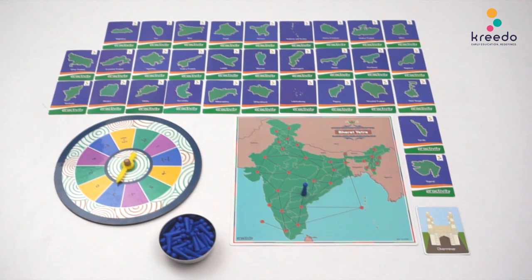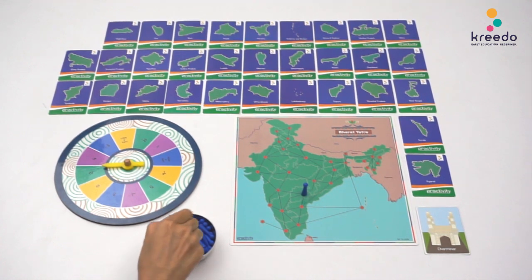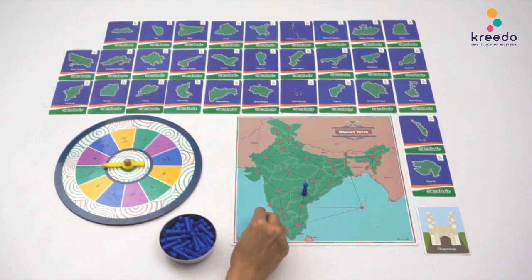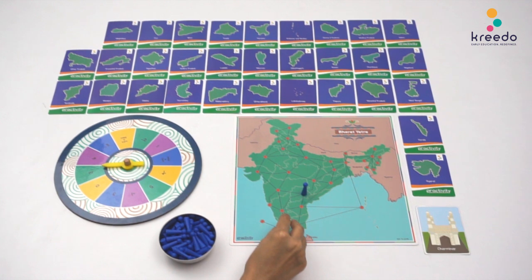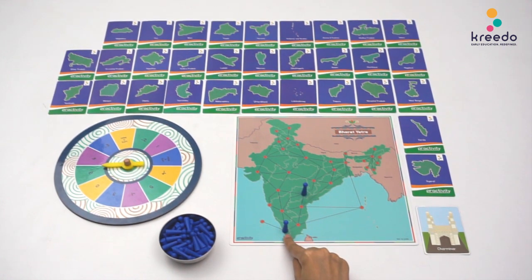Spin the roulette. Pick another skittle and tell the child to count as they move the skittle in the direction based on the number the roulette landed on. Point to the state on which the child has placed the skittle and ask the child: what state is this? Kerala.